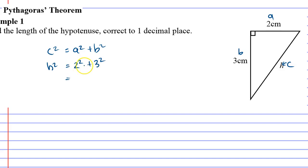Now, what I want to do first is work out the right side. 2 squared on my calculator plus 3 squared gives me 13. So that tells me that H squared equals 13.